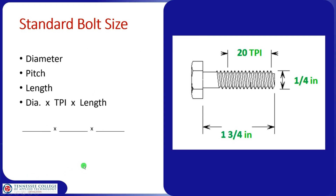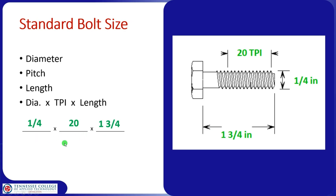Let's practice: we have three things to find — diameter, pitch, and length. Looking at the picture on the right, the diameter is a quarter inch. The threads per inch goes in the second space, and the length is an inch and three quarters. So we have a quarter by 20 by one and three-quarter inch bolt. We may shorten that to a quarter-20 bolt when describing it.